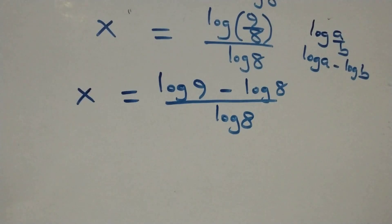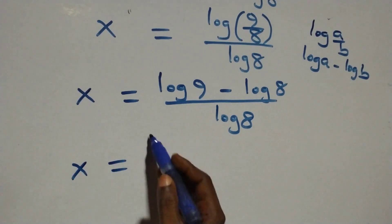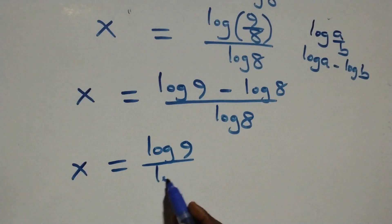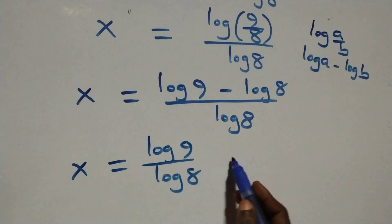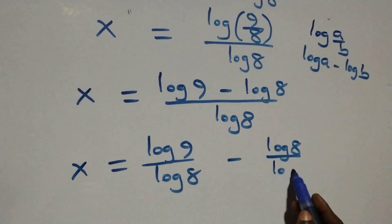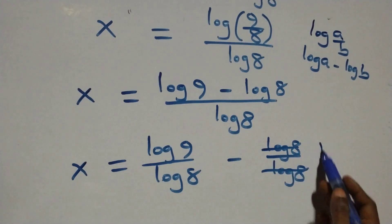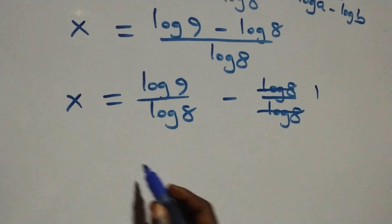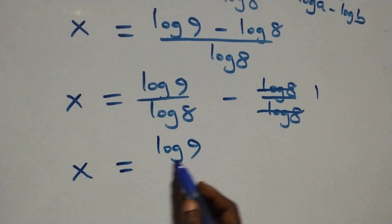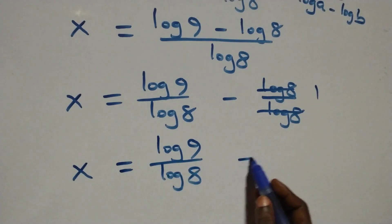Here we separate this into two fractions. We have x equals log 9 over log 8, minus log 8 over log 8. The log 8s in the second fraction cancel to give 1, which implies x equals log 9 over log 8, minus 1.